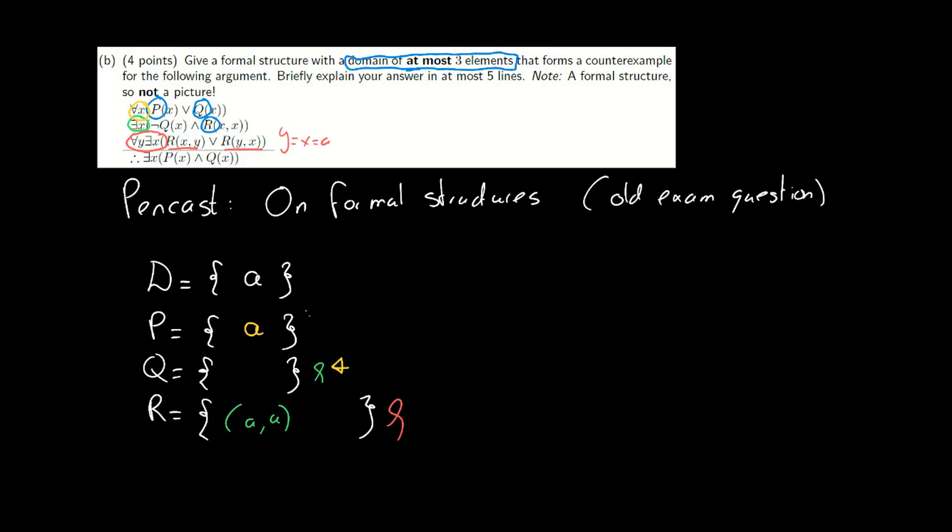So now all we need to do is make sure that the conclusion is false. The conclusion says that there should be something that's both in p and in q. In other words, all elements should either not be in p or not be in q. Well, since q is empty, this also checks out. The conclusion is false.